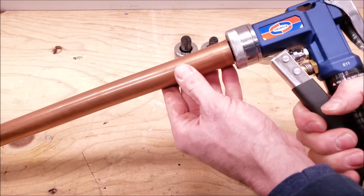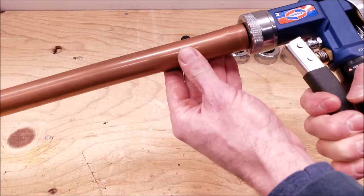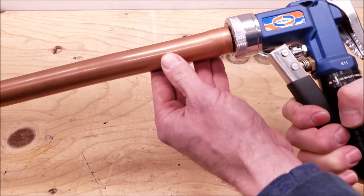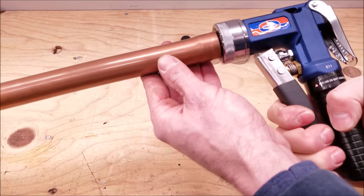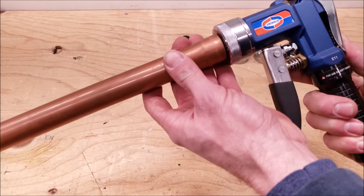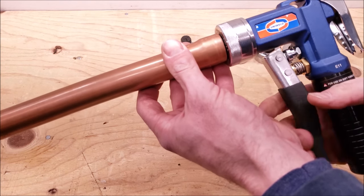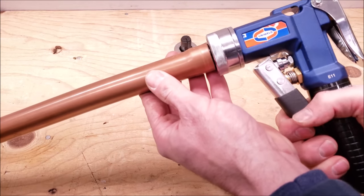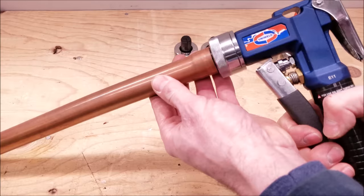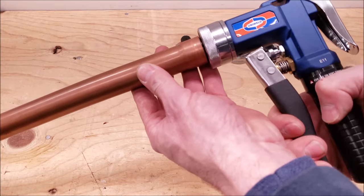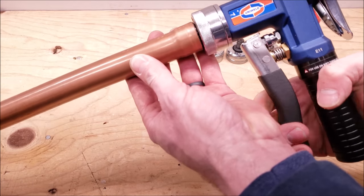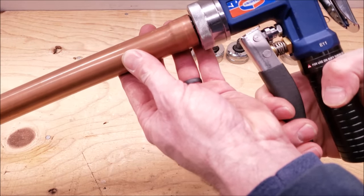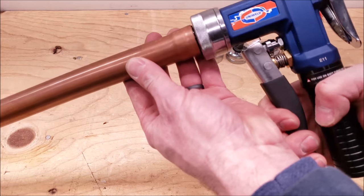We're going to do the same thing we did with the other one. We're just going to go ahead and go about halfway. And then we're going to go ahead and turn it a little bit. It still takes a little bit of force in order to swedge this pipe, but it's not crazy because you have this hydraulic assembly doing the work for you.